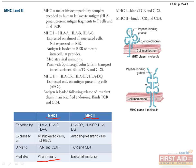MHC2, on the other hand, is encoded for by the HLA-DR, DP, and DQ genes and is expressed only on antigen presenting cells, and typically mediates immunity to bacterial infection.